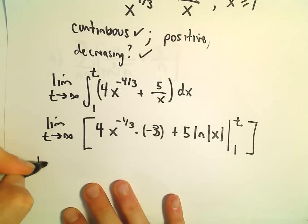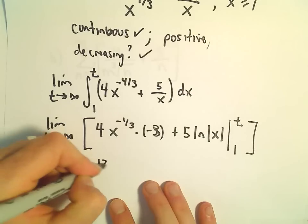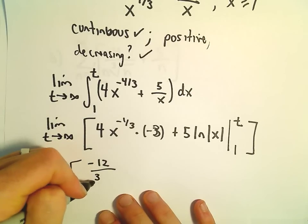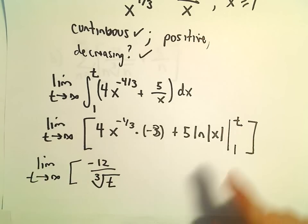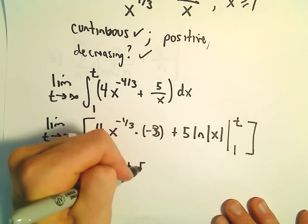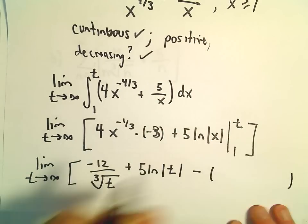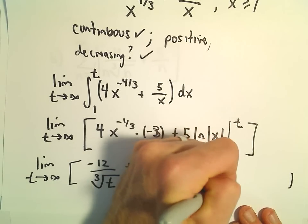All right, so we've got the limit as t goes to infinity. So this is going to be negative 12 over x to the one-third, or equivalently, the cube root of x. But again, I'm going to go ahead and plug in my t. So I have the cube root of t plus 5 times the natural logarithm of t minus, and again notice when you plug in the lower limits, you're just plugging in 1. You're getting some finite number.